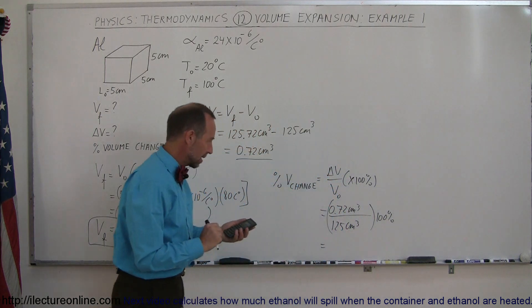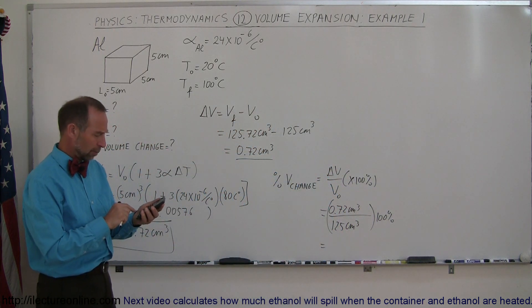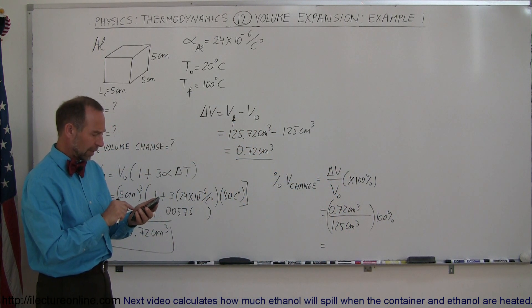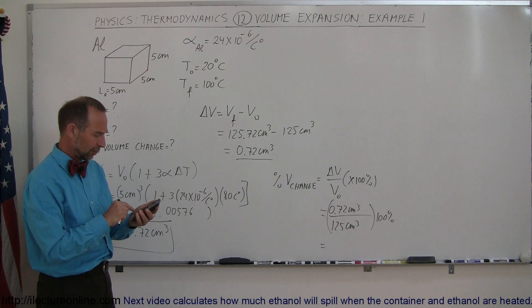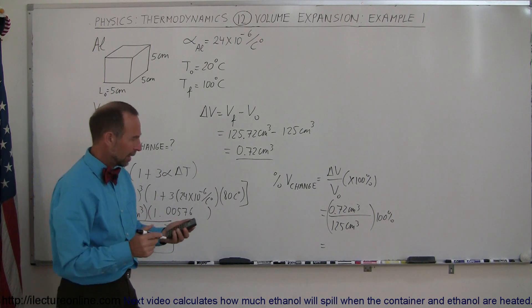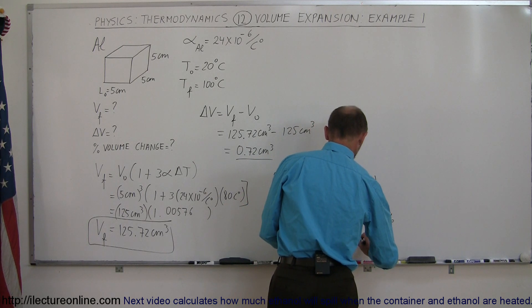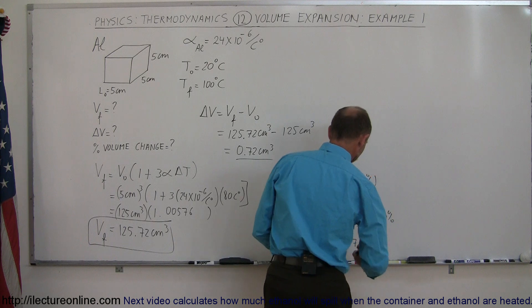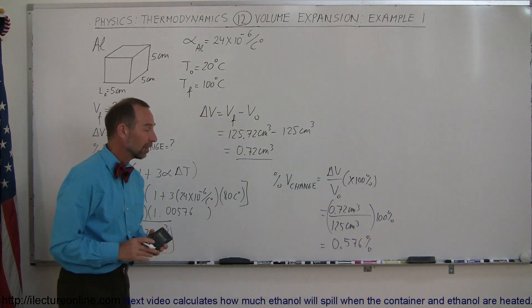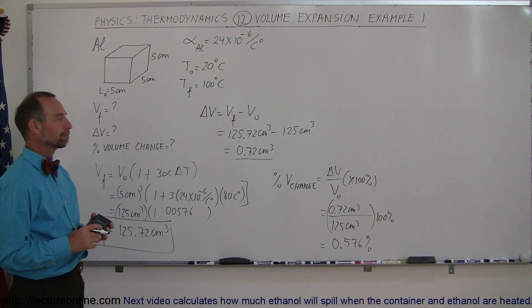125 centimeters cubed. Then multiply it times 100%. And let's see. Okay, so 0.72 divided by 125 times 100 equals, and this is 0.576%.